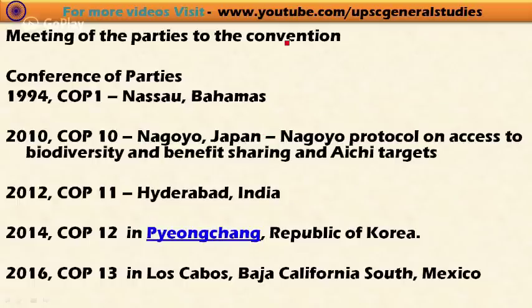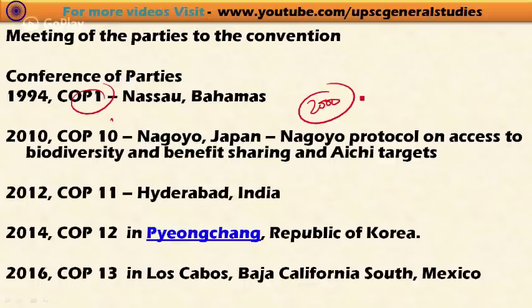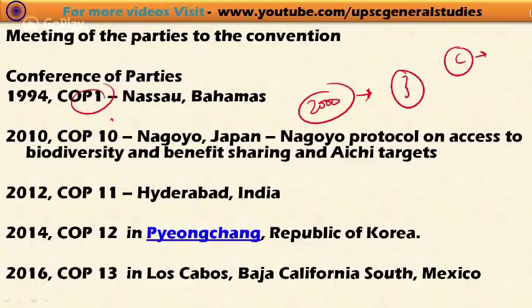Looking at the meetings of the Conference of Parties: COP1 first met in 1994 at Nassau in the Bahamas. In 2000, the Conference of Parties met at Cartagena, where the Cartagena Protocol on Biosafety was agreed. The convention is a forum for countries to decide on issues and implement the objectives of the CBD.